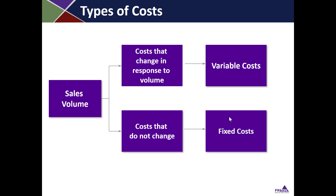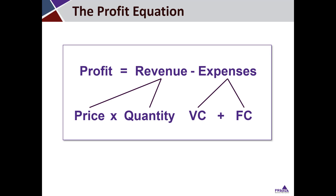But some costs don't vary with sales volume, like a marketing campaign. It doesn't matter if you sell one car or 100 cars, you still have to spend that same amount of money on that marketing campaign — so that would be a fixed cost. And if it's related to this project, we need to include that in our calculations too. If we don't, we won't have a true sense of what the project actually costs in total. If we look at the profit equation, which is just the income statement summarized at the highest level, you can see how these costs factor into the equation. Revenue is sales.